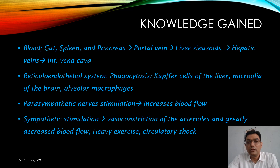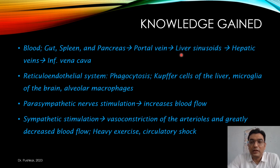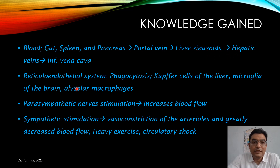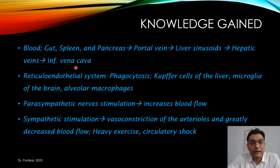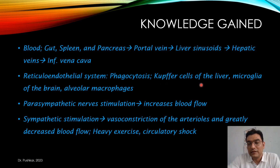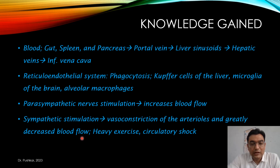To summarize: blood from the gut, spleen, and pancreas reaches the liver via the portal vein, flows through the sinusoids, and drains into the hepatic veins, which empty into the inferior vena cava — this is splanchnic circulation. The reticuloendothelial system, including Kupffer cells in the liver, microglia in the brain, and alveolar macrophages in the lungs, protects us from foreign particles through phagocytosis. Parasympathetic stimulation increases GI blood flow and aids digestion, while sympathetic stimulation decreases GI blood flow, as in heavy exercise or circulatory shock.